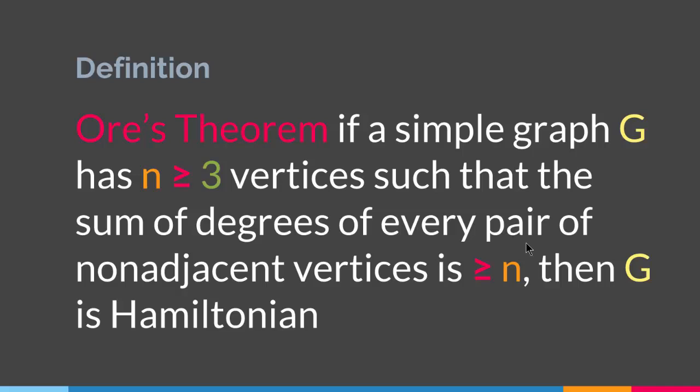So Ore's Theorem says that if a simple graph has vertices greater than or equal to 3, such that the sum of degrees of every pair of non-adjacent vertices is greater than or equal to n, then G is Hamiltonian. If this condition is present in our graph, the graph has a sufficient condition to be Hamiltonian. However if the condition is not present, it does not mean the graph is not Hamiltonian — we can have a graph where the condition does not apply and the graph is still Hamiltonian. I hope you understand the difference between those statements. And with this we come to the end of this lecture.